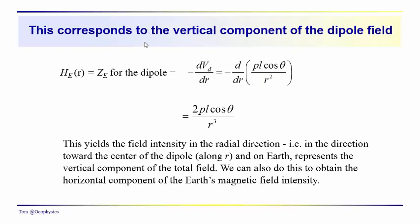We should keep in mind that what we have here is the vertical component of the magnetic field intensity. When we take this derivative with respect to R, on the Earth's surface this corresponds to the radial direction, which corresponds to the vertical direction. So we can think of this as the vertical component of the Earth's magnetic field, if we're representing it as a big dipole.